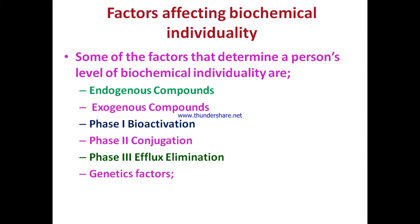The level of biotransformation also depends on phase one bioactivation — including the different types of enzyme polymorphisms — and phase two conjugation reactions. These reactions depend on various factors varying from individual to individual: what food a person consumes, how physically active they are, where they live, and their genetic makeup.